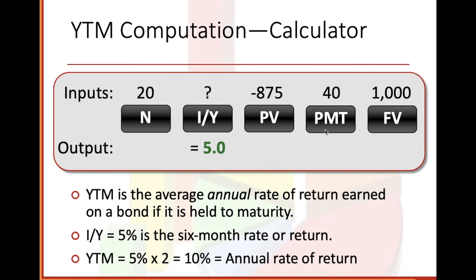The interest per year is 5% as the six-month rate of return, divided by two. The yield to maturity is 10% annual rate of return — because we're gaining 5% increments every six months, so 10% per year, which is really good. That means if you invested $1,000, the next year on interest you'd make 10% — $100.